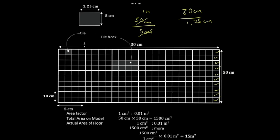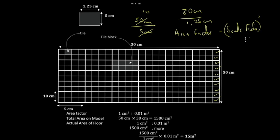The area factor is 1 square centimeter to 0.01 square meters. To get the area factor, it's called the scale factor squared. Our scale factor was 1 centimeter representing 0.1 meters. So if you square the scale factor, you think of it as 1 centimeter over 0.1 meters, then square that.